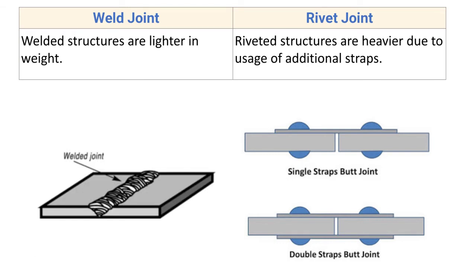Welded structures are lighter in weight since additional accessories like rivets and strap plates are not used. Riveted structures are heavier due to the usage of additional straps and rivets.